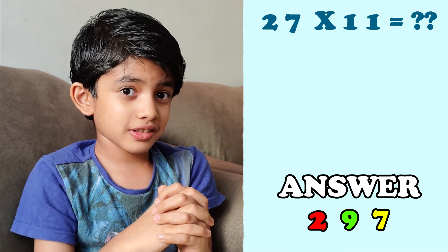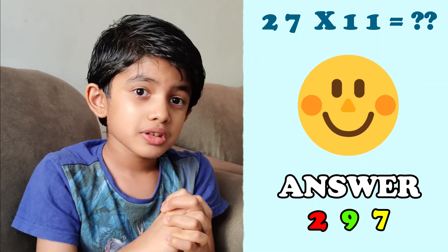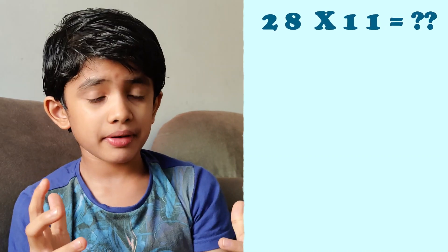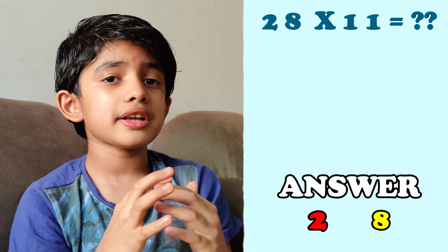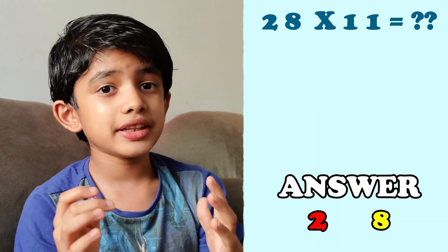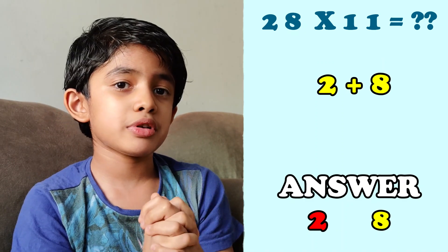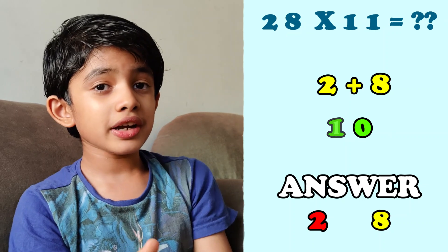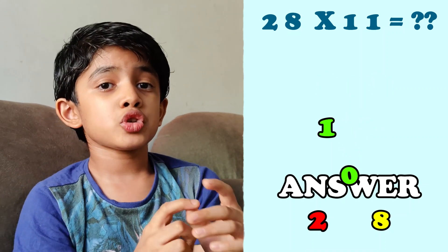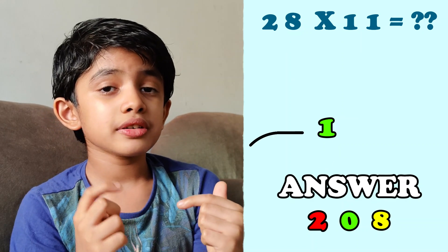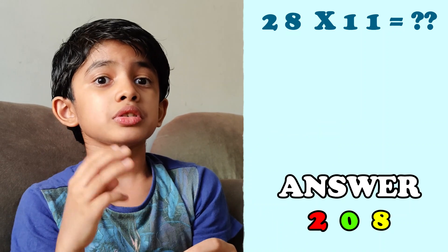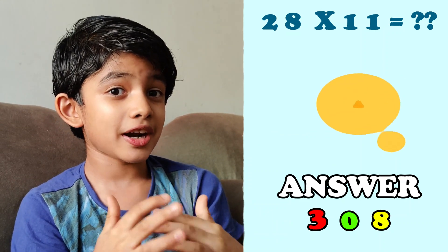So let's take another example. How much is 28 times 11? First write 2 as the first digit and 8 as the last digit of the answer. Then add 2 and 8 which will give you 10. So write 0 in between 2 and 8. Then add the carry 1 to the first digit 2 which will give you 3. So the answer is 308.